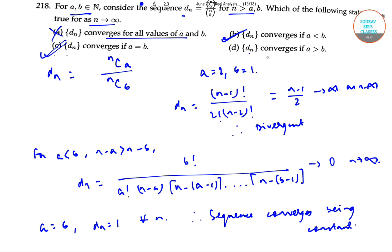And option D: d_n converges if a > b. This is incorrect. As we have shown that if a = 2, b = 1, the series diverges, and here a > b. So D is again incorrect. So B and C are the correct answers.